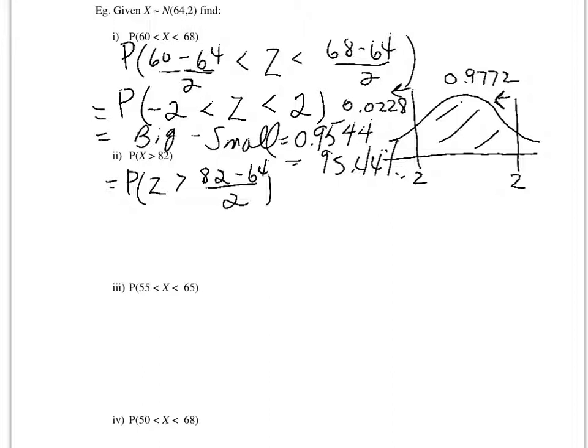So by standardizing, we convert X into Z and 82 into 9. So what's the chance that a Z-score is greater than 9?